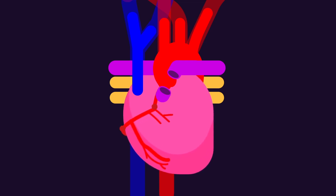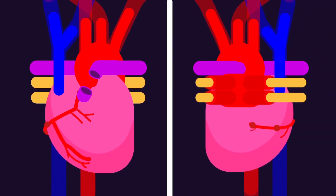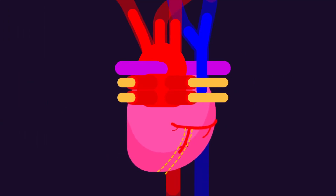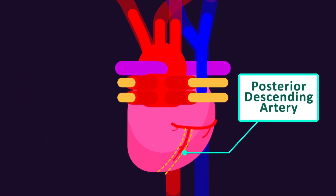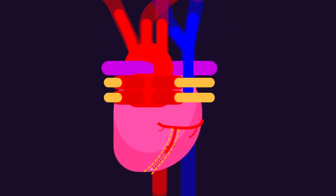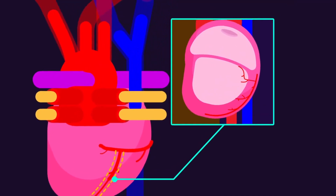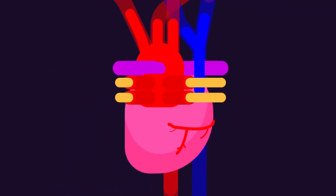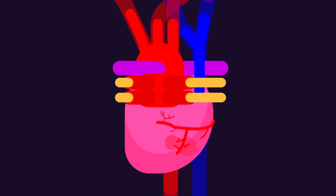The RCA gives rise to the posterior interventricular artery on the posterior surface of the heart, and it travels in the posterior interventricular septum. It is also known as the posterior descending artery, as it runs along the posterior surface of the heart towards its apex, giving rise to branches that supply the interventricular septum. In addition to these two branches, many small atrial branches supplying the atria and ventricular branches supplying the ventricles also originate from the main trunk.